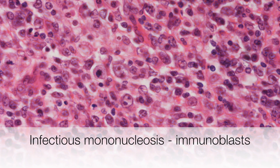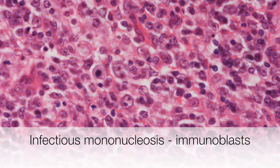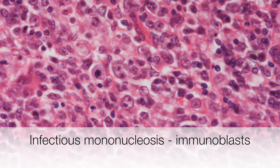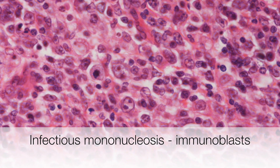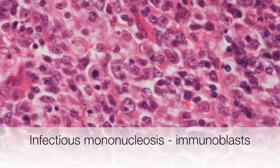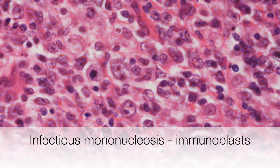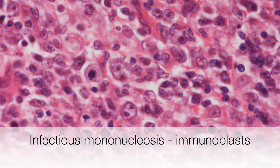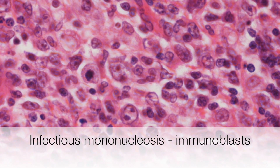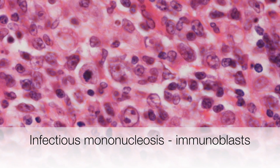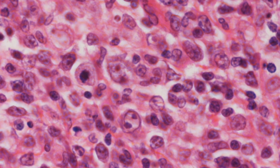This is an example of polymorphic B-cell hyperplasia in a lymph node from a patient who had infectious mononucleosis. It is polymorphic because the hyperplastic B-cell infiltrate comprises primitive cells that are immunoblasts, immature plasma cells, and mature plasma cells.